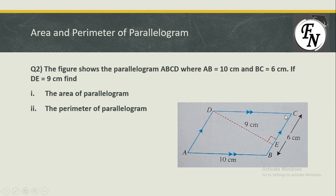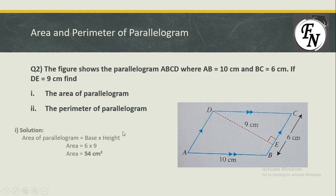The 90-degree dotted line is 9 centimeters, which is the height of this parallelogram. The 10 centimeter and 6 centimeter sides are not making 90 degrees between them, so 10 centimeters cannot be used as base or height. There is only a 90-degree line with BC, so we use 6 centimeters as the base and 9 centimeters as the height. Area equals 6 times 9, which is 54 centimeters squared.